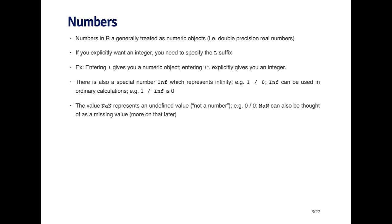Perhaps the most important type of object in R is the number. Numbers in R are generally treated as numeric objects - pretty much all numbers are treated as double precision real numbers. Even if you're looking at a number like one or two, R thinks of those as numeric objects. There is a way to explicitly say you want an integer by specifying the capital L suffix.